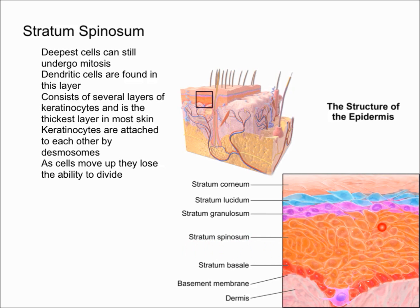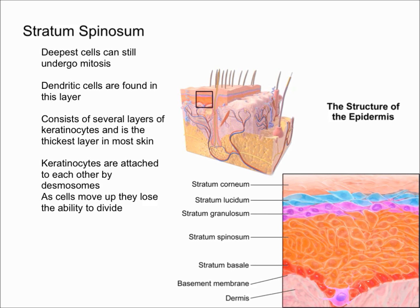Now let's talk about the stratum spinosum — this thick layer right here. It's important to remember that the deepest cells in the stratum spinosum can still undergo mitosis, while further up the cells will not be capable of undergoing mitosis. Dendritic cells are also found in this layer.